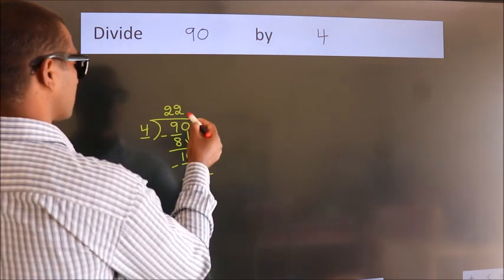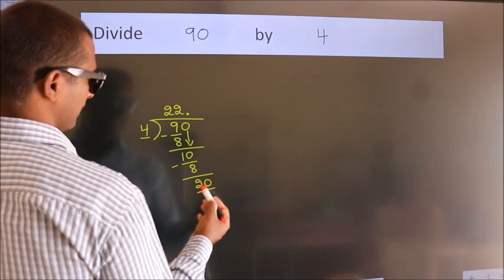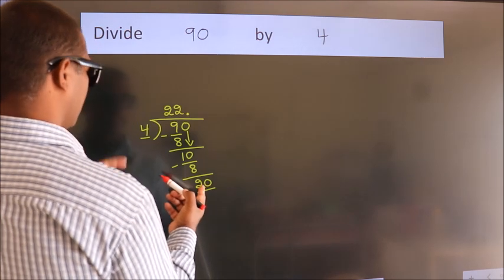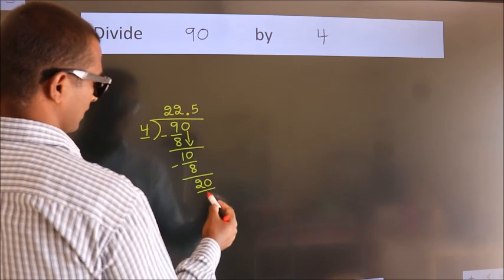So what we do is put a dot and take 0, giving us 20. When do we get 20 in the 4 times table? 4 fives is 20.